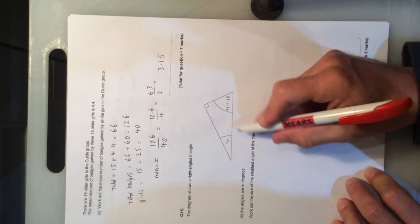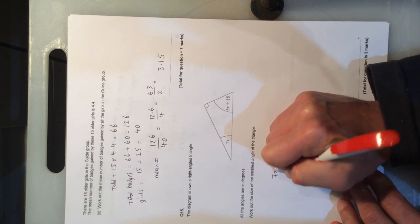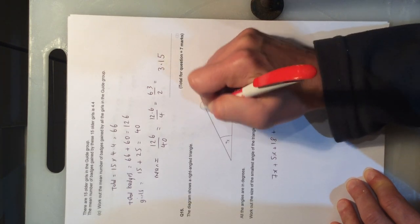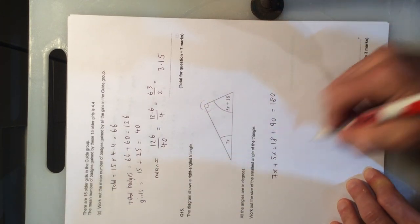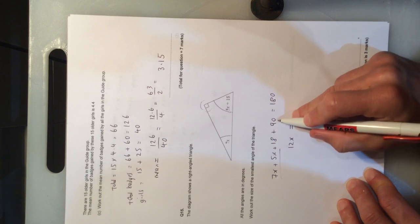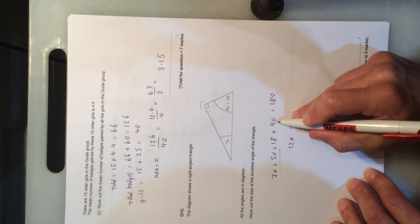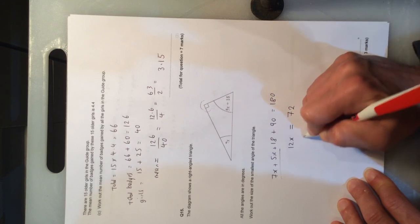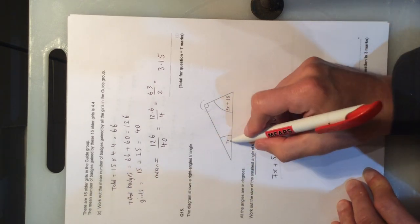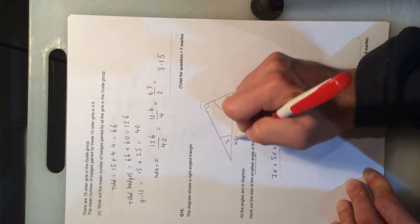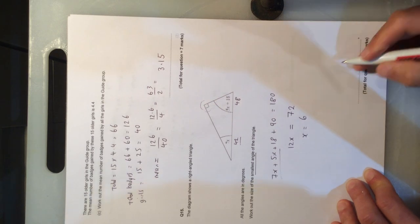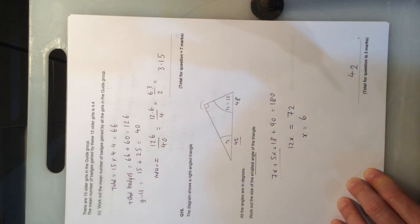Question 15. Angles add up to 180 inside a triangle. So you've got 7x plus 5x plus 18 plus the 90 degrees in the corner gives you 180. 12x equals 108, take that away to give us 72 on that side. Therefore, x divided by 12 gives us 6. But we're asked for the smallest angle here. 7 times 6 is 42. 5 times 6 is 30, add 18 is 48. So actually the smallest one is the 7x angle, which was 42 degrees.